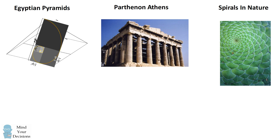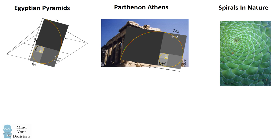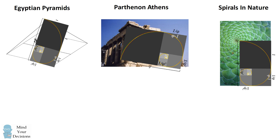The ratio of the long side of the pyramid to its base, the ratio of the width of the Parthenon to its height, and the spirals are all connected by the golden ratio.